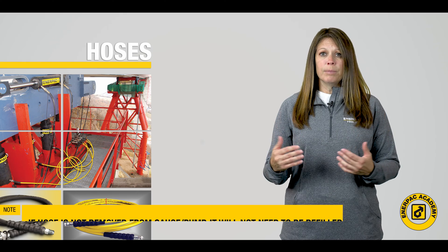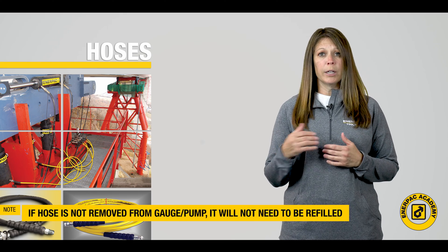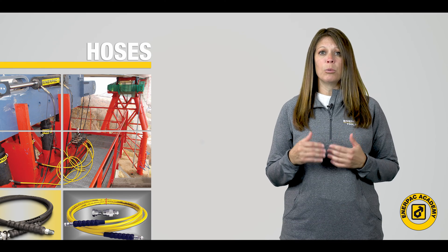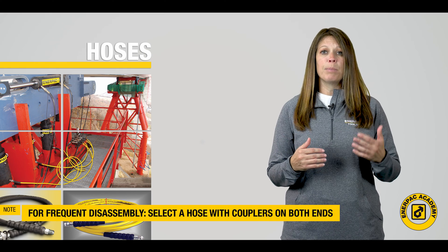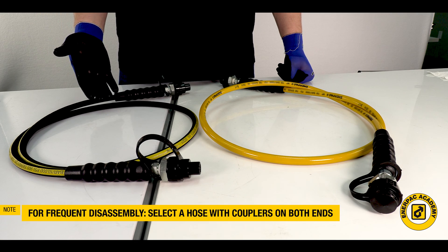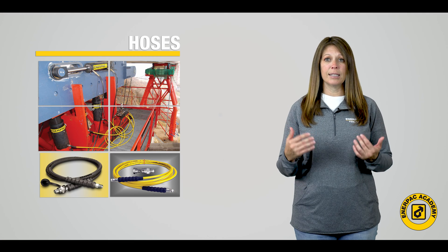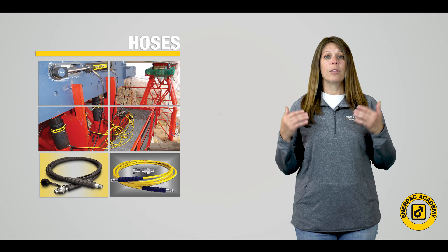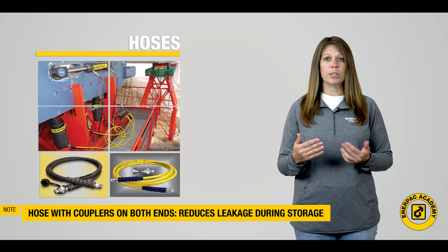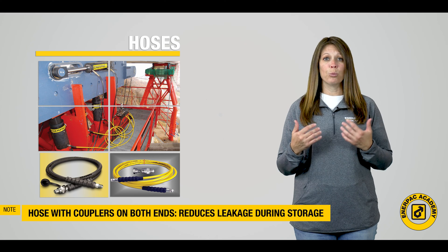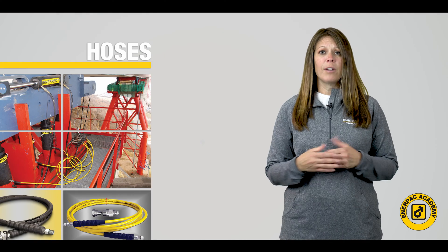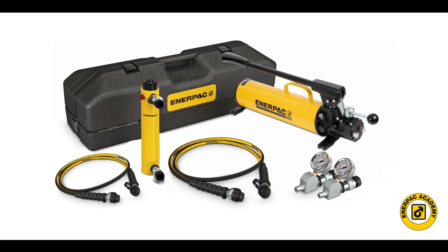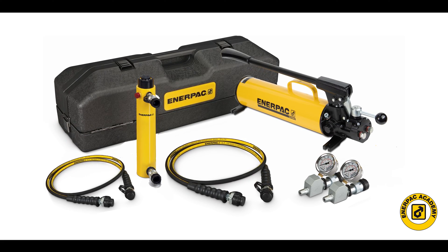Once the hose is prefilled, if it is not removed from the pump or gauge, it will not need to be refilled. For systems that will need to be disassembled often, it is best to have a quick coupler on both hose ends. This will allow quick and easy disassembly and will also prevent oil from leaking out of the hose, reducing leakage during storage and eliminating having to refill the hose for reassembly. With this dual coupler assembly, the pump, cylinder or tool, and hose can easily be placed into a tote box or other storage space.